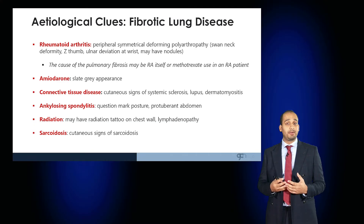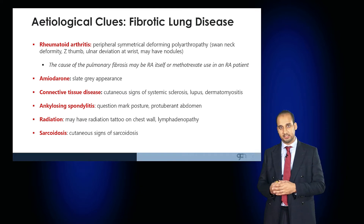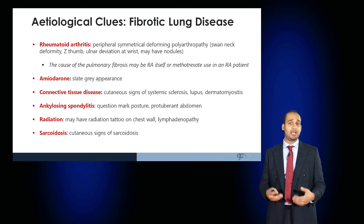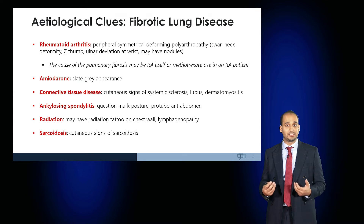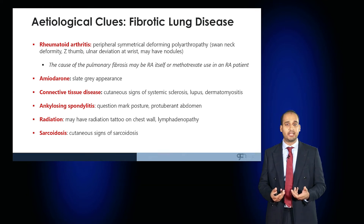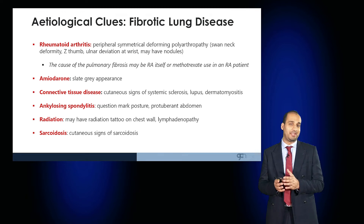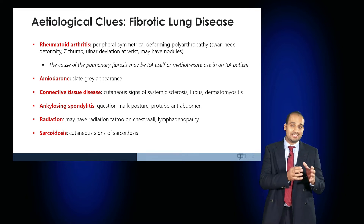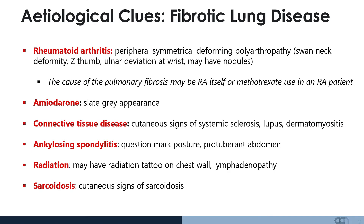There are a number of potential etiologies, each with their own etiological clues. For example, rheumatoid arthritis is associated with fibrosis; the patient may have evidence of a peripheral symmetrical deforming polyarthropathy, with ulnar deviation, swan neck deformity, Z-thumb, and nodules in their hands. Fibrosis in these patients may be caused by the disease itself or iatrogenically through the use of methotrexate.